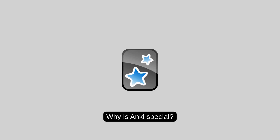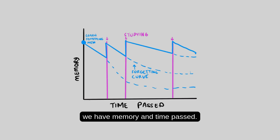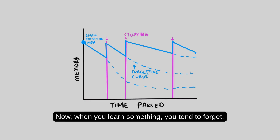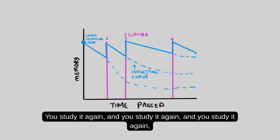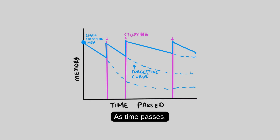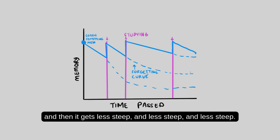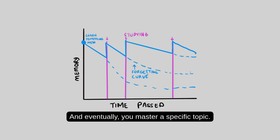Why is Anki special? Because it uses the theory of spaced repetition. On the axis we have memory and time past. When you learn something, you tend to forget. Then you study it again and again, and you reinforce the knowledge. As time passes, you don't forget as fast — the forgetting curve gets less and less steep. Eventually you master a specific topic.